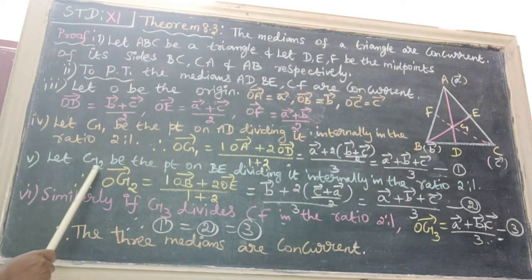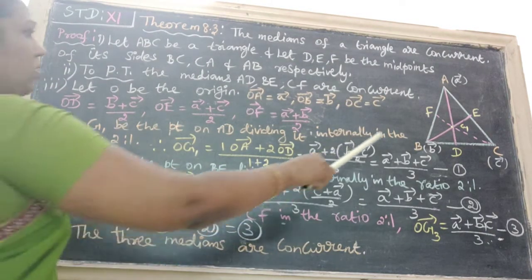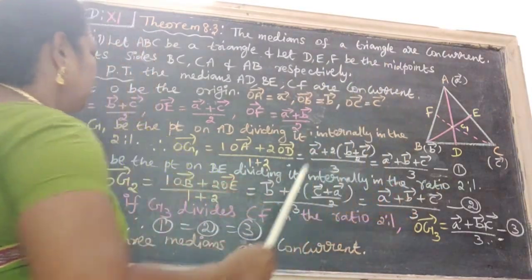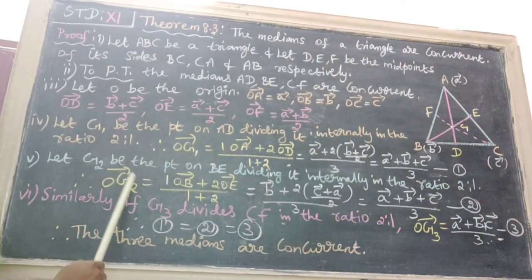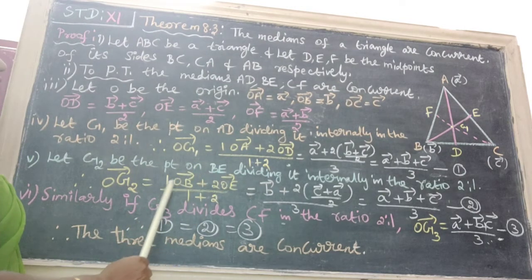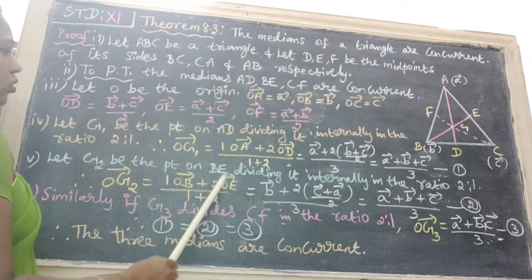Next one, let G2 be the point on BE dividing it internally in the ratio 2:1. Therefore, OG2 vector equals 1·B vector plus 2·OE vector divided by 1 plus 2.